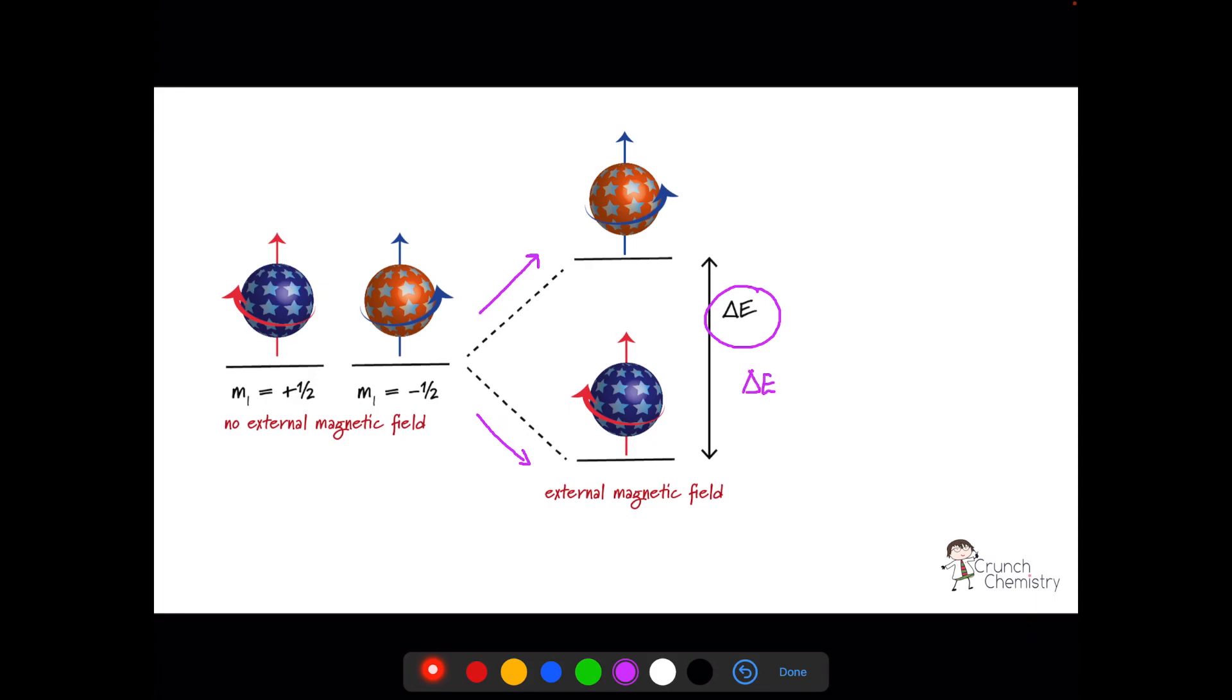If we then radiate our sample with radio waves and radio waves have got a frequency of energy matching delta E, the difference between our two energy levels. Remember, delta E equals H times V, where H is Planck's constant and V is the frequency of the radiation. Energy is absorbed and nuclei are promoted from the lower spin state to the higher one. Energy is given out when the nuclei return to the ground state.